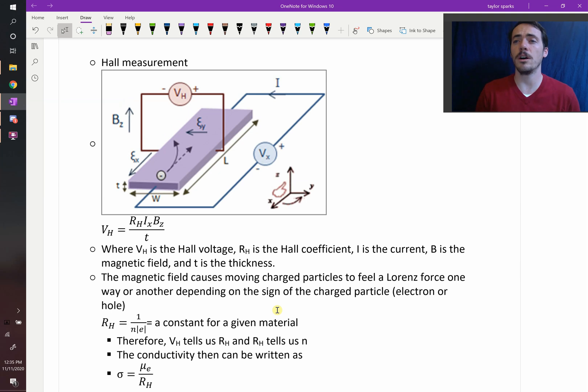You need to do something called a Hall measurement. A Hall measurement is actually pretty amazing. Here's how it works. You take your sample, that's this purple material here, and you hook it up to a power source, so a battery, a power supply, whatever. We know what that's going to do. It's going to cause an electrical current to travel through your material.